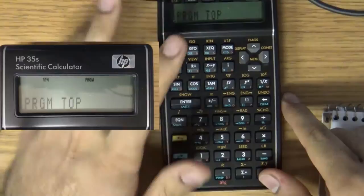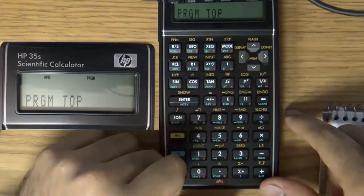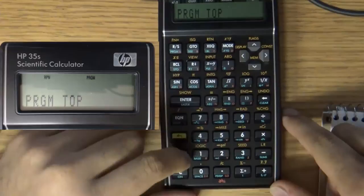So, let's enter the program mode by hitting blue button and then run stop. R slash S stands for run stop and that's the program mode. So, now we're in program mode.